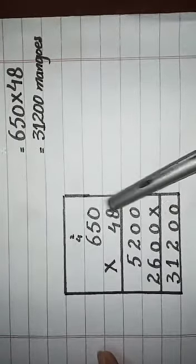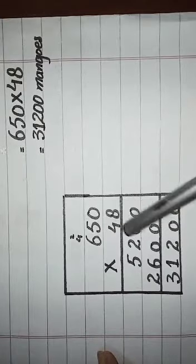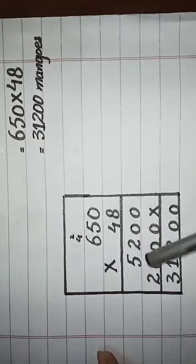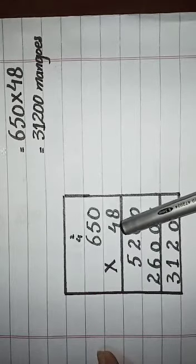First multiply 8: 8×0 is 0, 8×5 is 40, you will write 0 here, carry 4. 8×6 is 48, and 48 plus 4 is 52. Then you will multiply 4: 4×0 is 0.